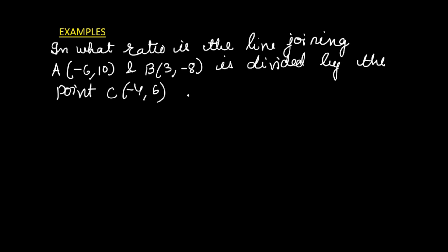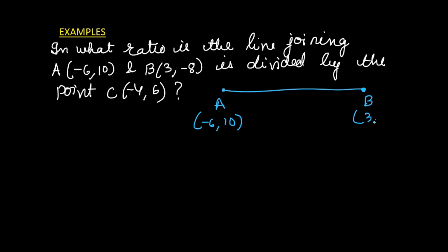In this case, instead of finding the coordinates of the point of division, we have to find the ratio. Now whenever this kind of question comes, an important thing to remember is: let us mark the points, and there is point C dividing the line in some ratio. Instead of taking the ratio as m is to n, we take the ratio as k is to 1, because if you use m is to n the solution becomes very complicated and lengthy.